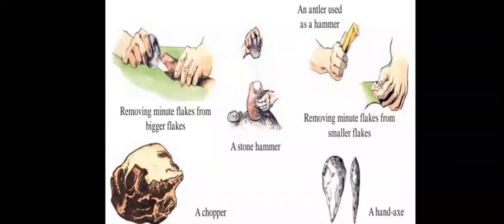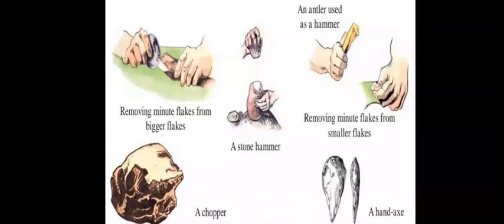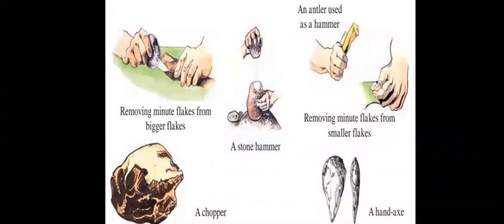Homo erectus used to mentally visualize his tools and then shape them, using the technique of imagination. To obtain stone flakes, he used things like antlers and hammers. Antlers are the horns of deer. He further sharpened the edges of those flakes by scraping off smaller pieces to make scrapers with a very sharp edge. Homo erectus used different tools for different tasks according to their demands.